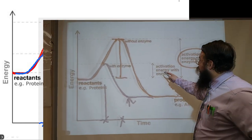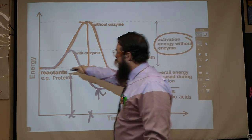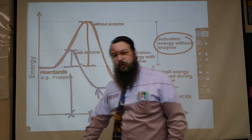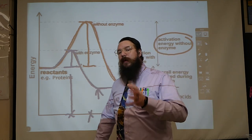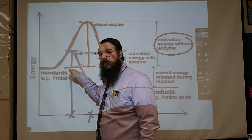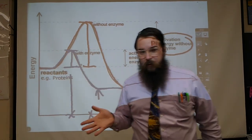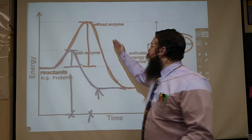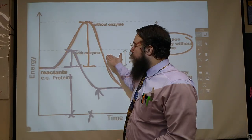Make sure that you note that our activation energy without the enzyme is much larger. We're going from the reactants just to the top of that curve — there is our activation energy with an enzyme, much smaller than our activation energy without the enzyme. Some enzymes work so well that they can lower the activation energy all the way down to the bottom, so as soon as the reactants and the enzyme all commingle, your reaction just starts right there with the amount of thermal energy present in the room.